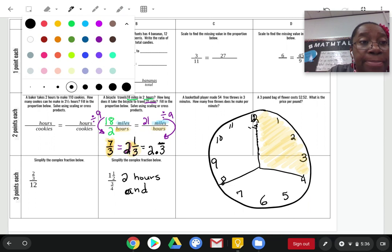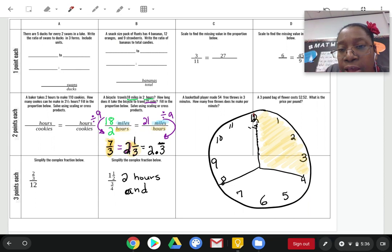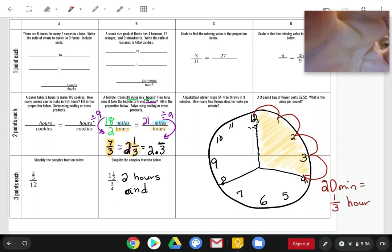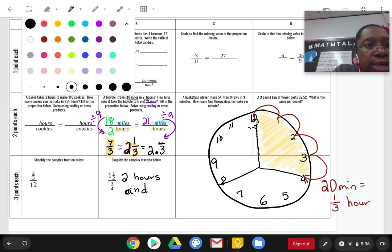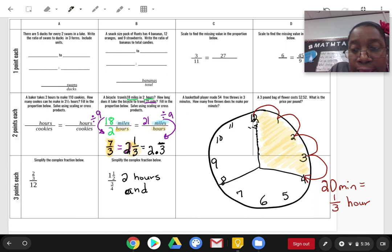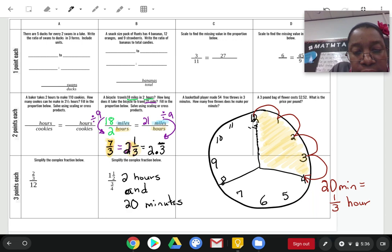So, how many minutes would that be? Let's count. So, if I start at my 12, that's going to be 5 minutes, 10 minutes, 15 minutes, 20 minutes. So, notice that 20 minutes is equal to 1 third of an hour. Therefore, if I had asked you to answer this question in hours and minutes, your answer would be 2 hours and 20 minutes. Okay. But that's only if I had asked you to answer in hours and minutes, which I didn't.